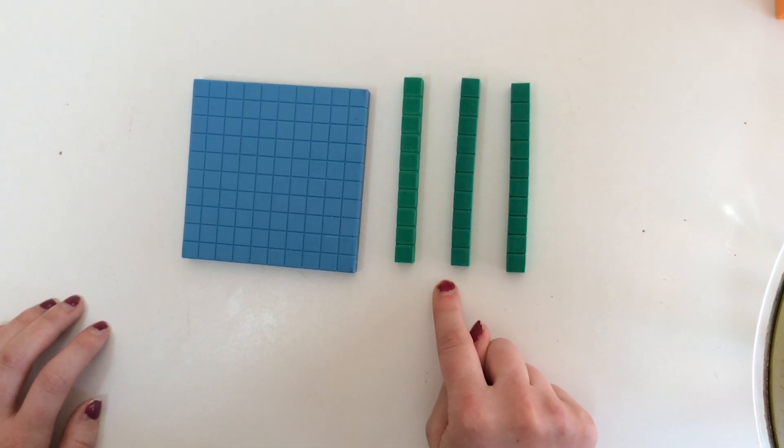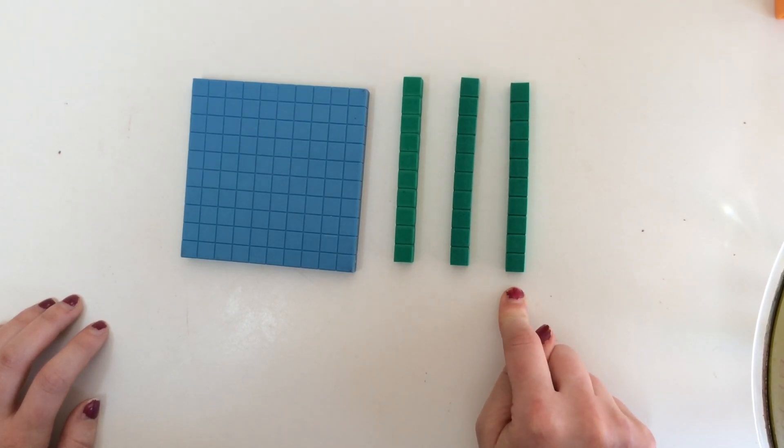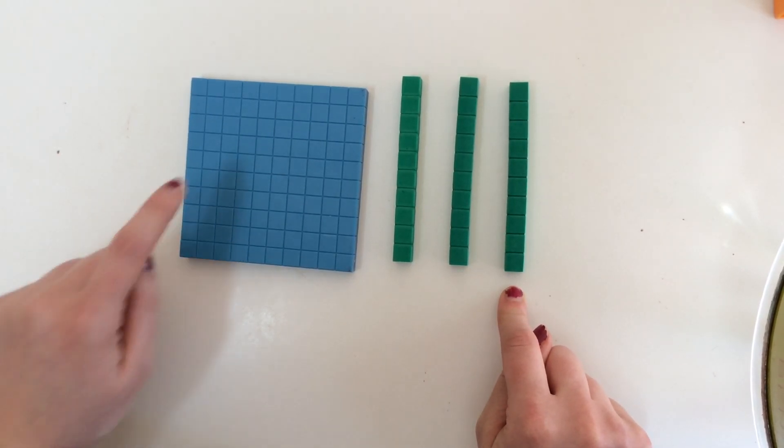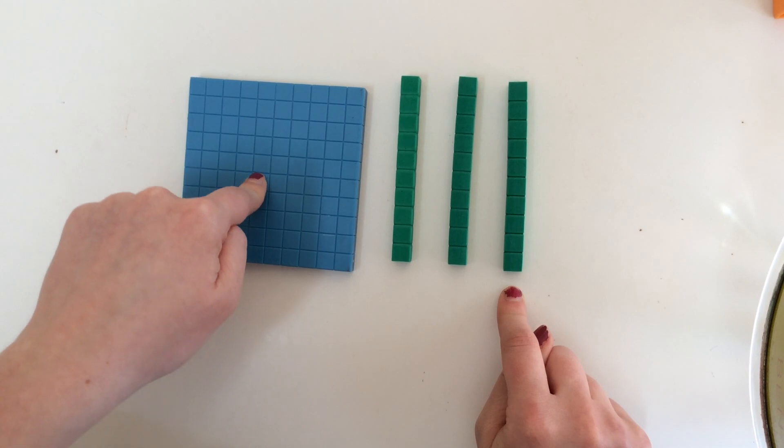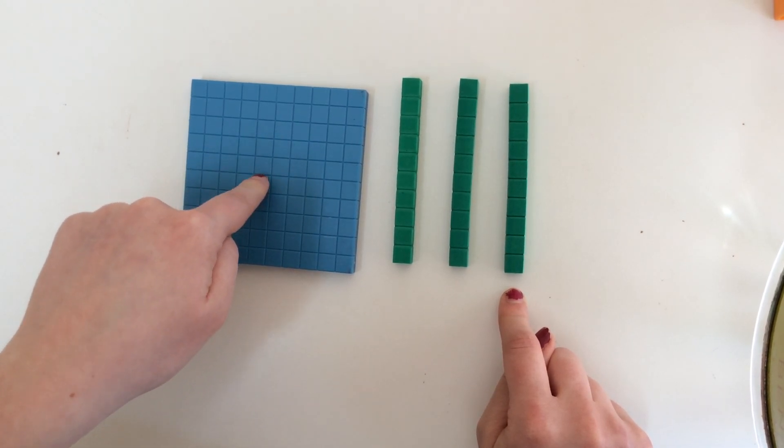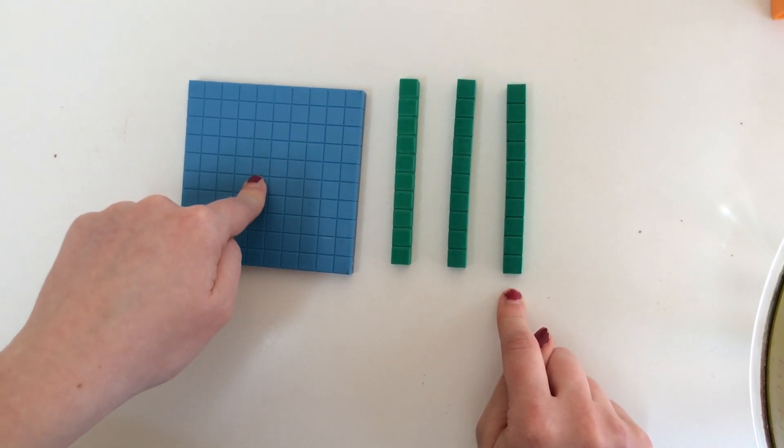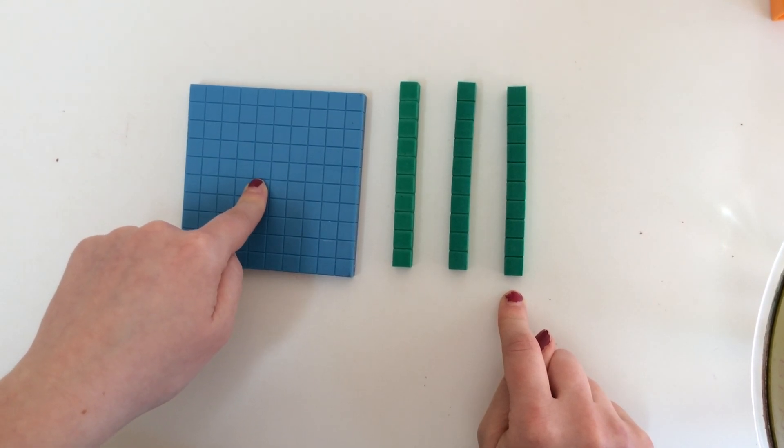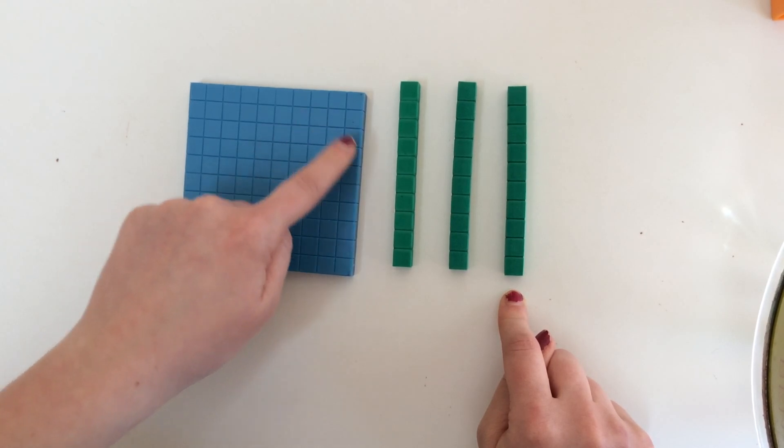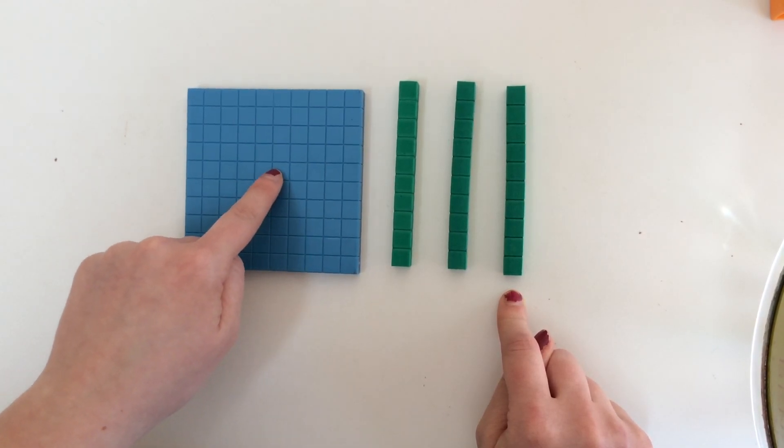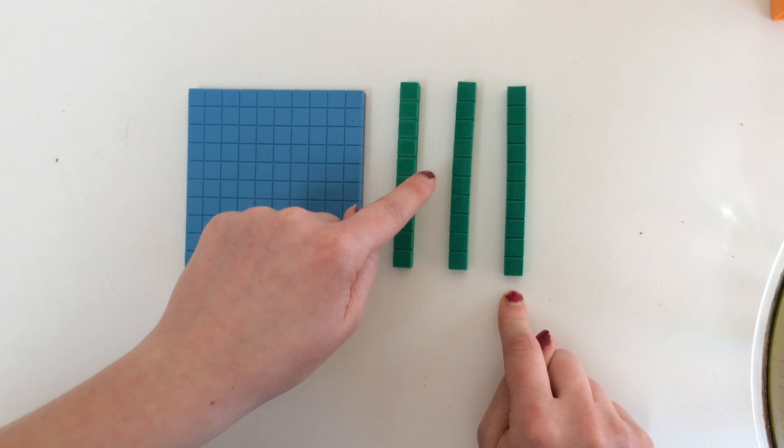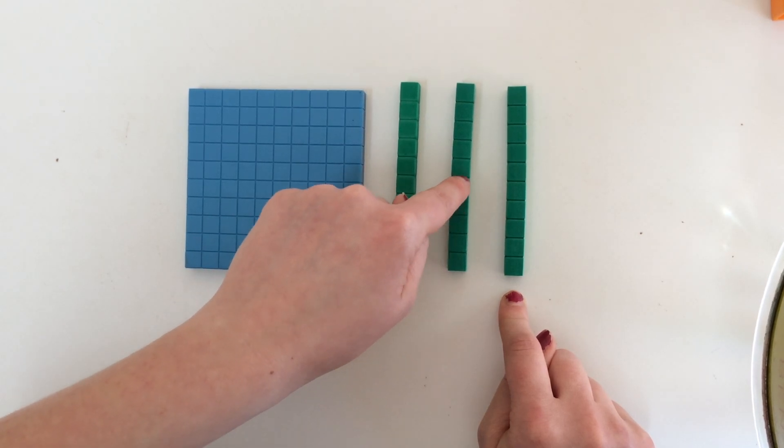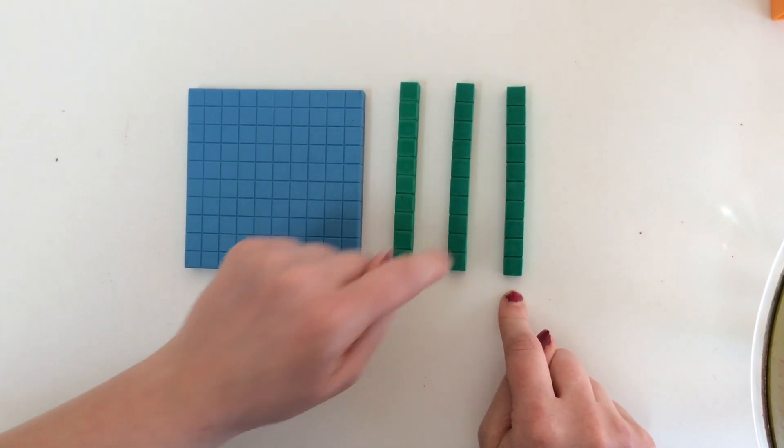10, 20, 30. And we have 100 over here. So we have to add 100 plus 30 to get how many total cubes we have. Let's think about that. 100. So it'd be 110, 120, 130 total cubes.